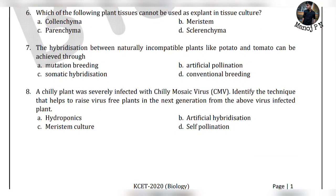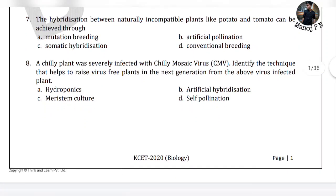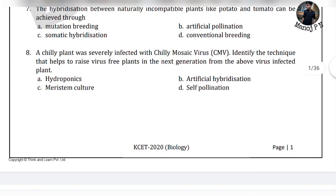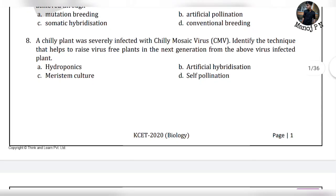The eighth question: a chili plant was severely infected with the chili mosaic virus. Identify the technique that helps to raise virus-free plants in the next generation from the above virus-infected plant. It is a chili plant with severe chili mosaic virus attack. If you want to develop the next generation plant that is supposed to be virus-free, the technique is meristem culture.